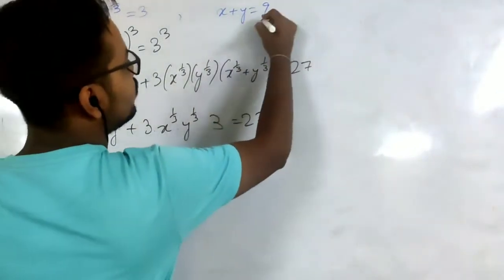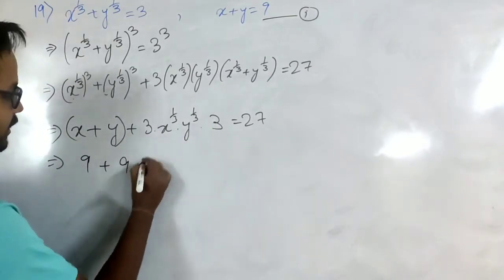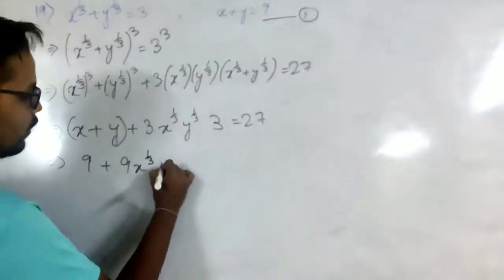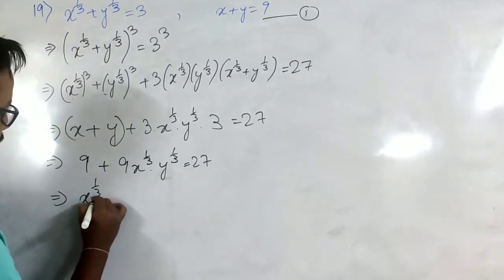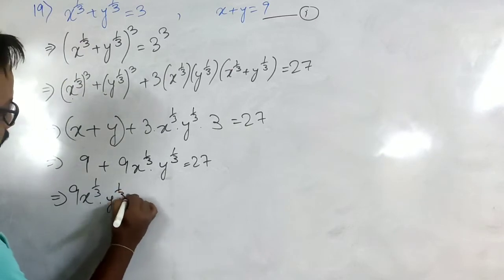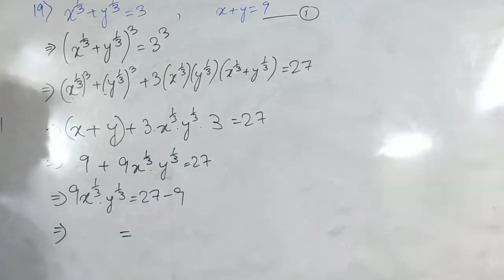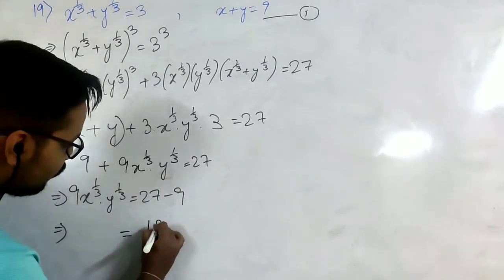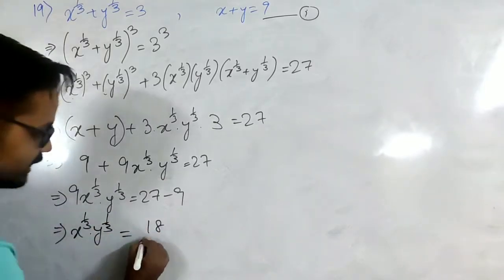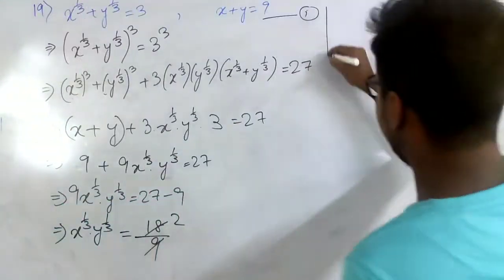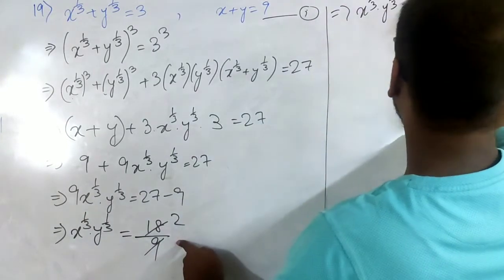Since x + y = 9 (equation 1), substituting gives 9 + 9·(x^(1/3))·(y^(1/3)) = 27. Moving 9 to the right: 9·(x^(1/3))·(y^(1/3)) = 18, so (x^(1/3))·(y^(1/3)) = 2. Therefore x^(1/3) · y^(1/3) = 2.